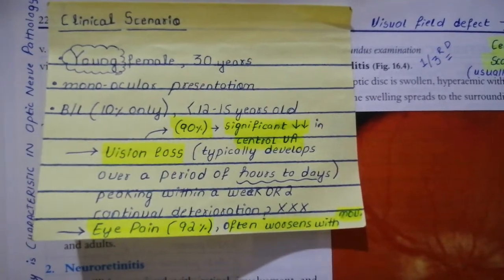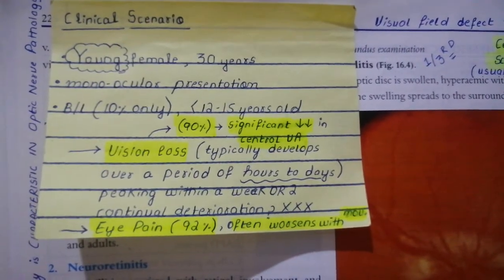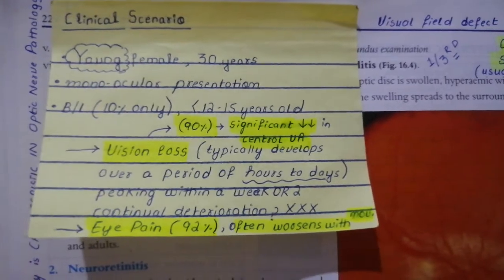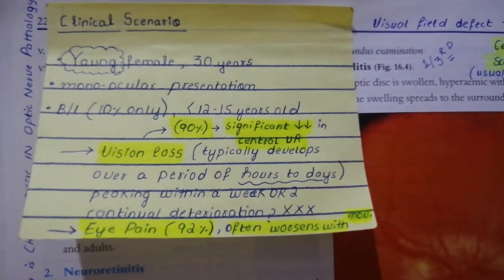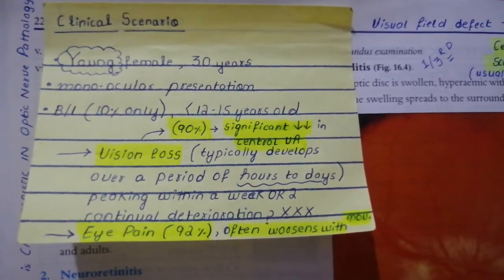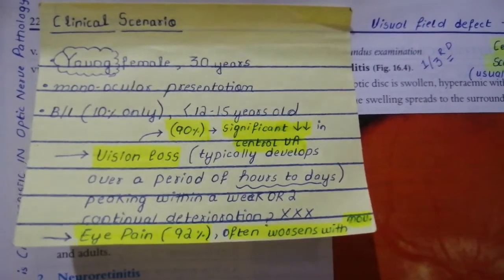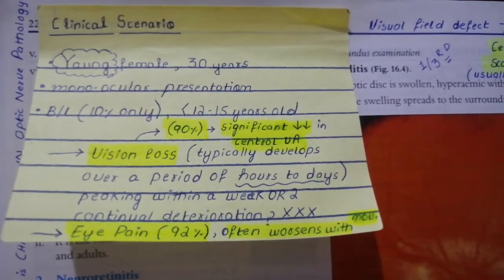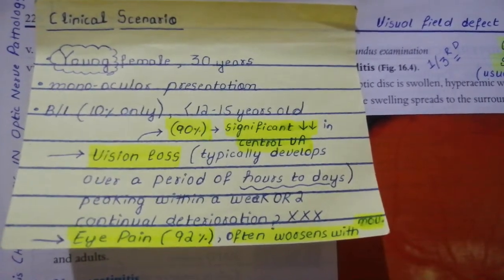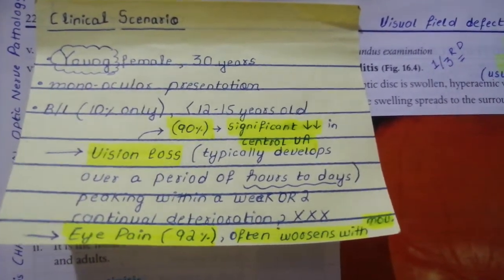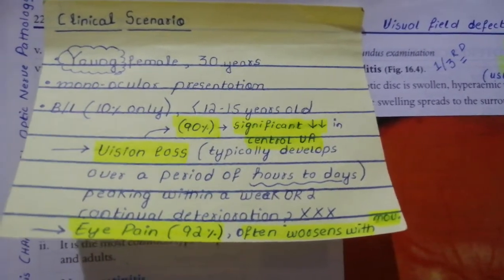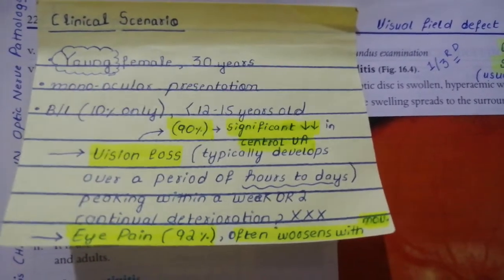Certain autoimmune conditions like SLE can also present with optic neuritis. To summarize, optic neuritis is inflammation of the optic nerve — a demyelinating inflammatory condition — mostly associated with multiple sclerosis, although para-infectious, systemic infectious causes, and other autoimmune conditions can also be associated.